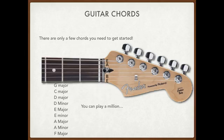There are a few chords you need to learn to really get started — there's not really that many. G major, C major, D major, D minor, E major, E minor, A major, A minor, and F major. You can play a million — or a billion — songs with those.